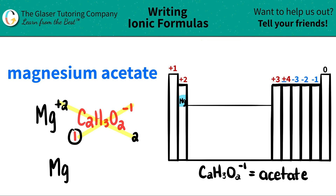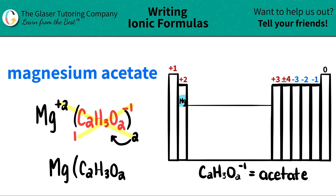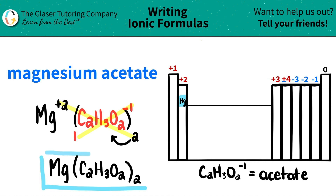Now we're able to write the formula. I have magnesium — the subscript is one, so I don't write the one. Here's the important thing: if you have multiple polyatomics, you need to put parentheses around the polyatomic. So I put parentheses, write out acetate as C₂H₃O₂, close the parentheses, and write a subscript of two. So magnesium acetate is Mg(C₂H₃O₂)₂.